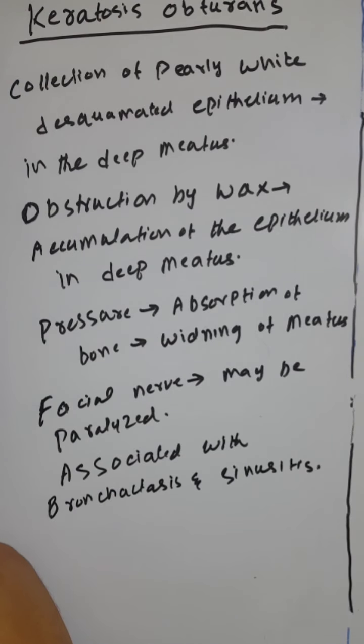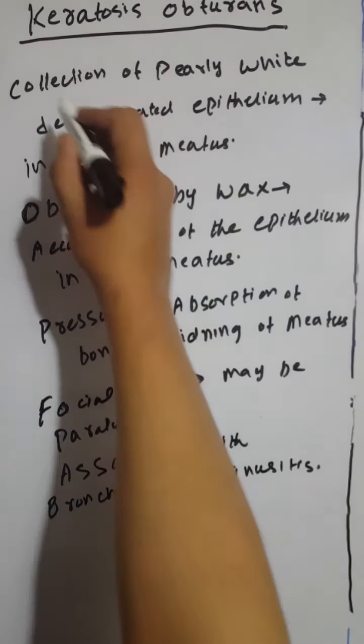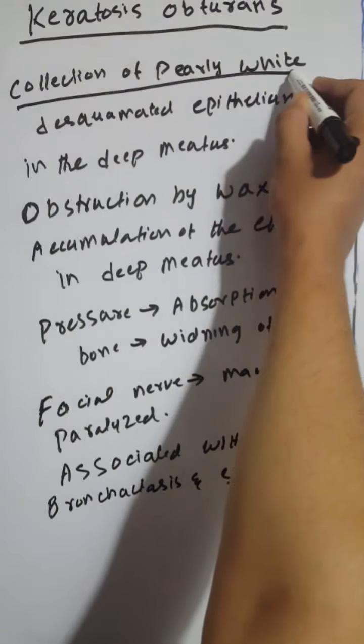Keratosis obturans is the collection of pearly white desquamated epithelium in the deep meatus.